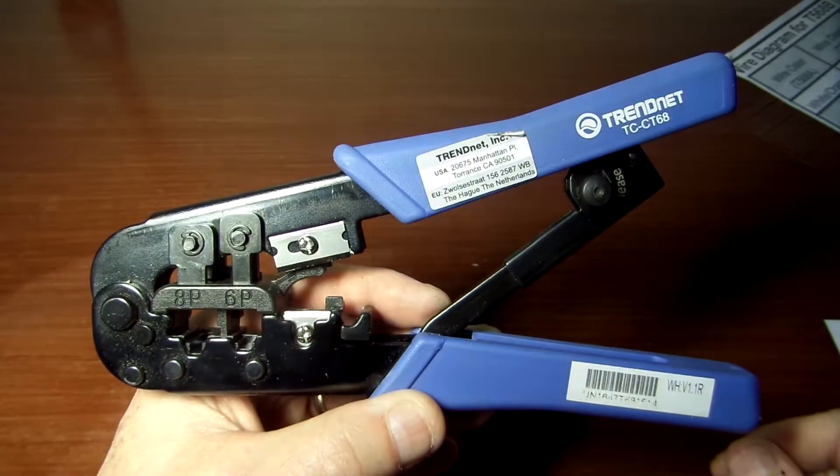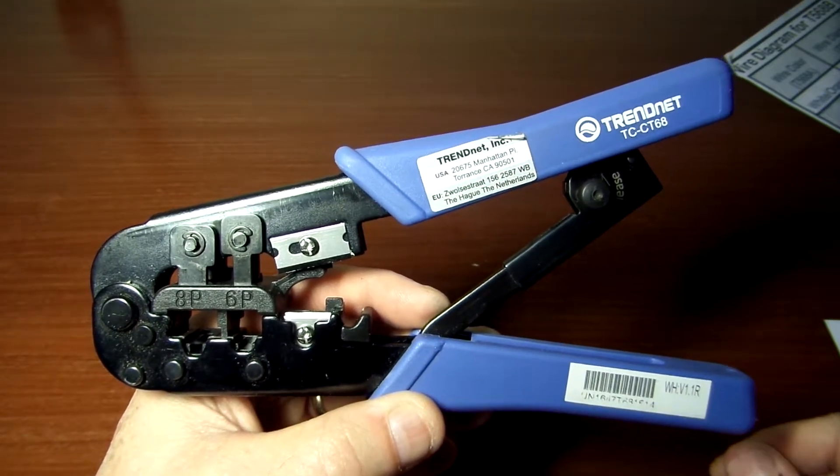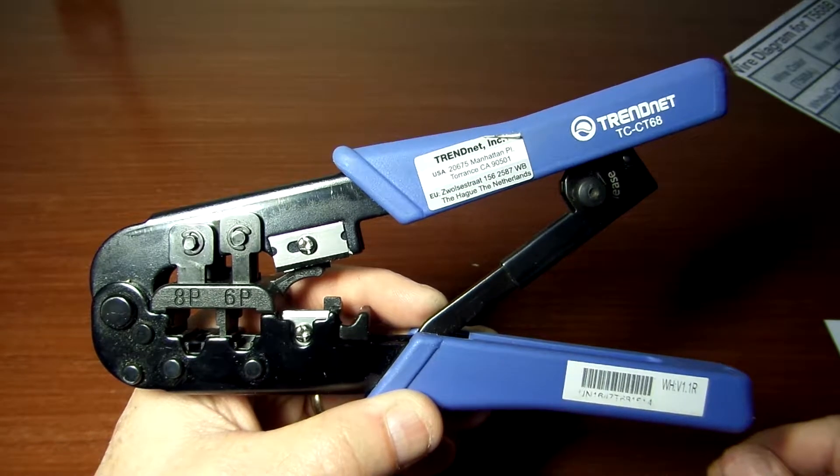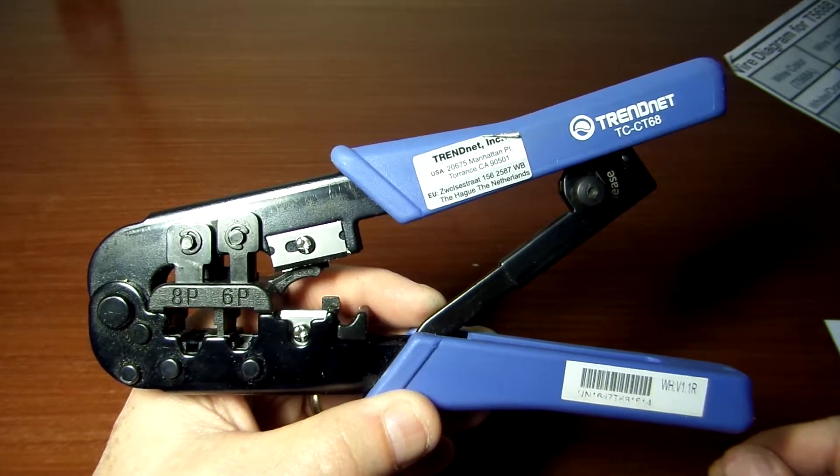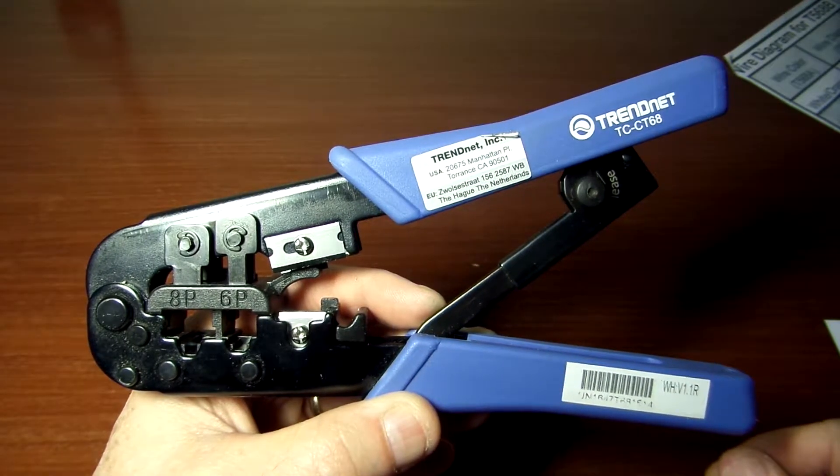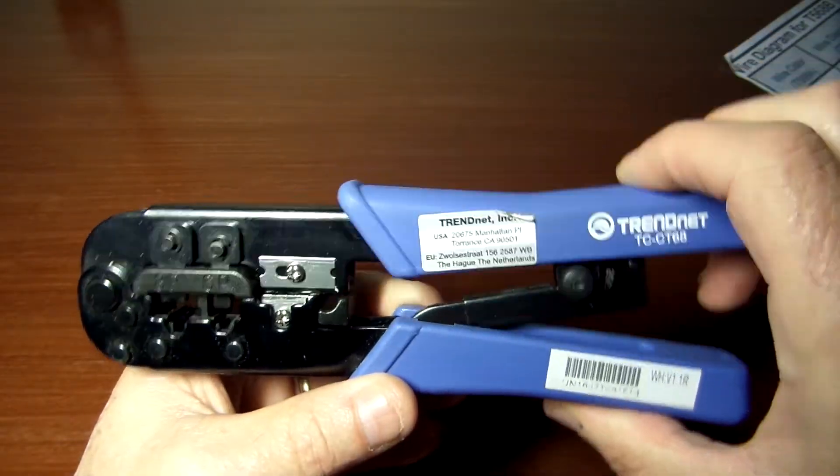You're also going to need a good quality crimping tool. This tool is from TrendNet. It does the RJ45, it'll do the Cat5, Cat5e, and also the Cat6. In addition to crimping, it also will cut and it also has a stripper on it as well.